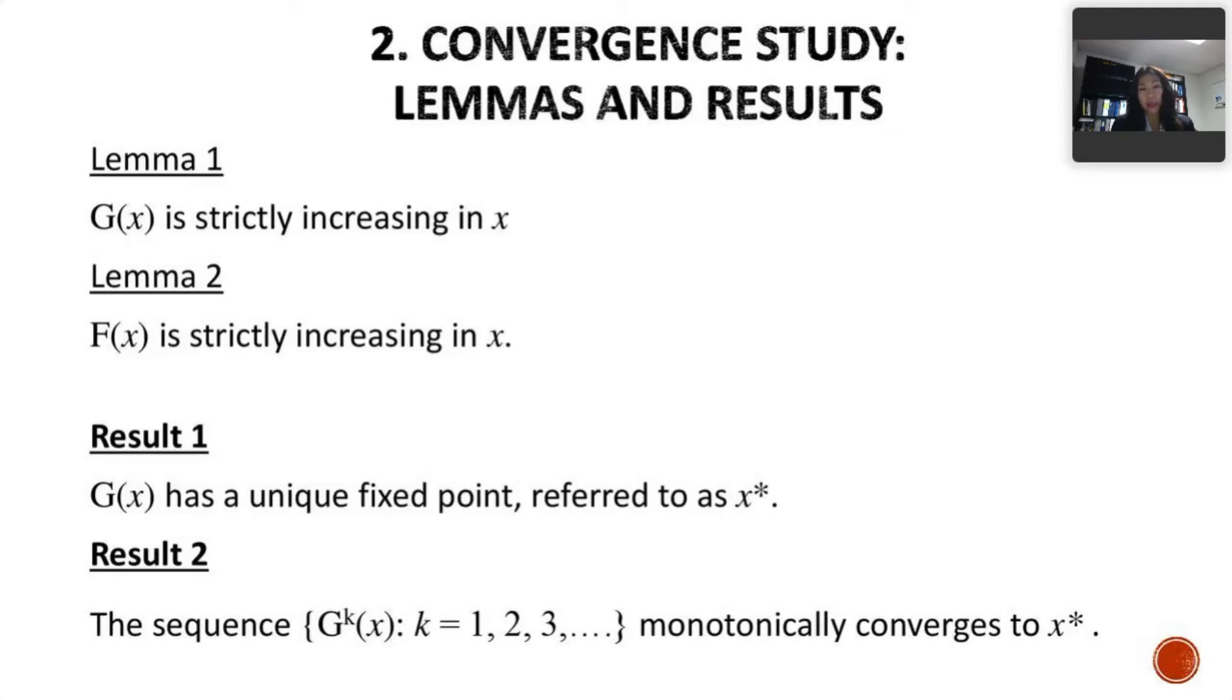Now, the second result really shows the convergence. So we look into the sequence of the experience level from batch 1, batch 2, and further down, batch 3 and so on. And we found that the sequence of experience level monotonically increases or decreases and it converges into the fixed point x*.